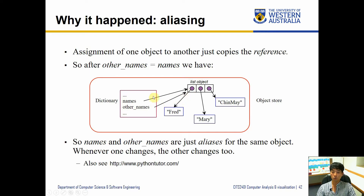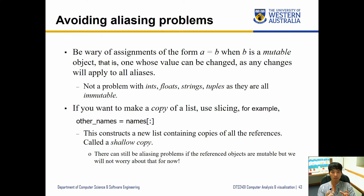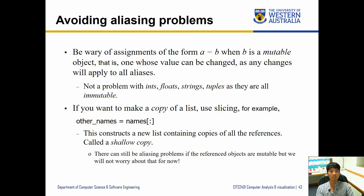This is what we call an alias — where two different names are pointing at the same object. We want to avoid this aliasing problem. The problem arises because the object is mutable; if it's mutable, changing it may affect the other variable as well. What we want to do is make a copy rather than pointing at the same object, and this can be achieved using slicing.